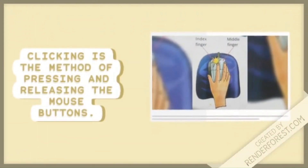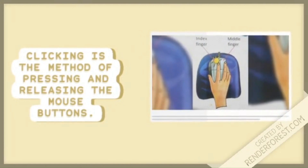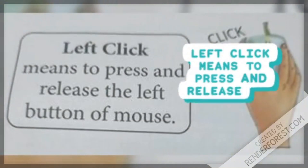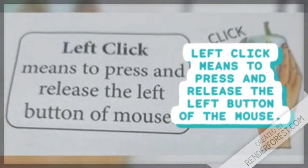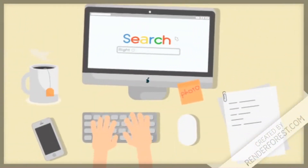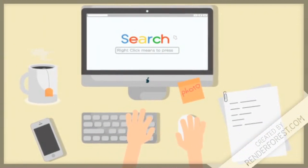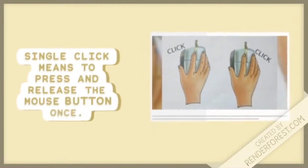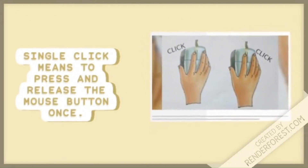Clicking is the method of pressing and releasing the mouse buttons. Left click means to press and release the left button of the mouse. Right click means to press and release the right button of the mouse. Single click means to press and release the mouse button once.